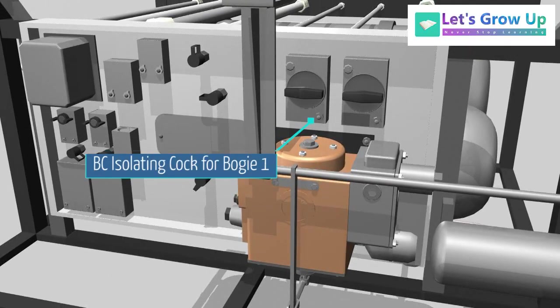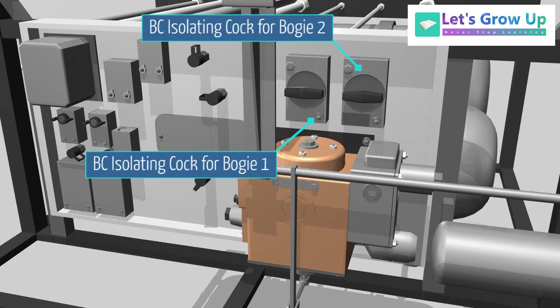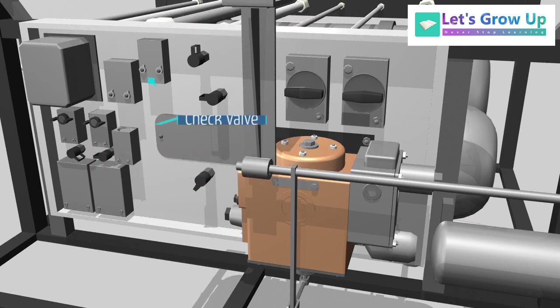BC isolating cock for bogey-1. BC isolating cock for bogey-2. Check valve. Check valves are designed for manifold panels. When the air delivery is interrupted, the check valves prevent air that has already been delivered from flowing back out of reservoirs and pipes.